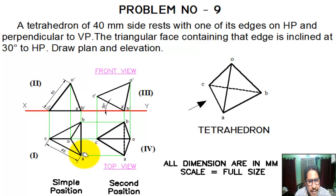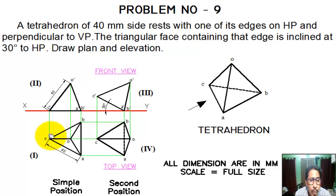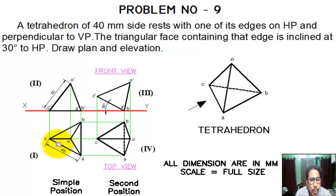Then, with pencil compass, we take a dimension of 40mm. With center A, we draw an arc. Again with pencil compass, we take 40mm. With center B, we draw an arc. These arcs intersect at point C. We join A, B, C, A. Now we find the centroid O by dividing the three sides to find their midpoints, and join O to C, O to A, and O to B.